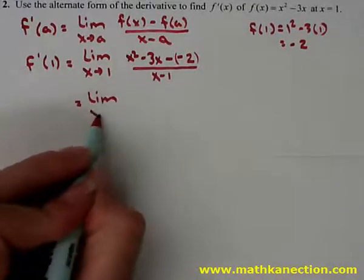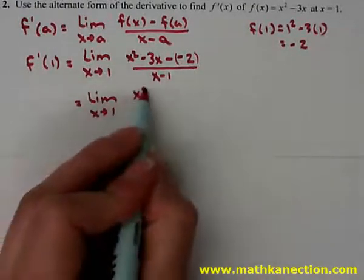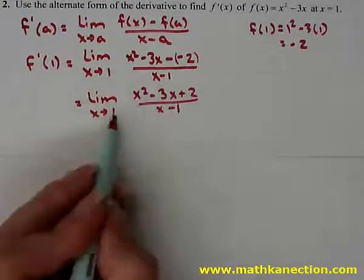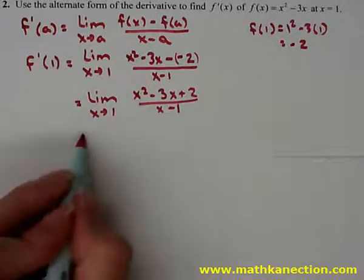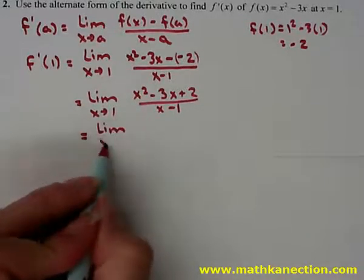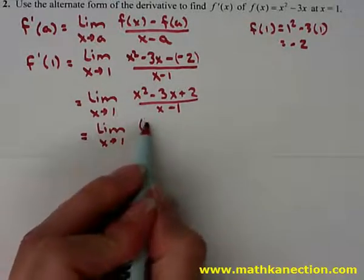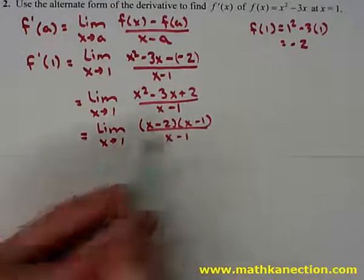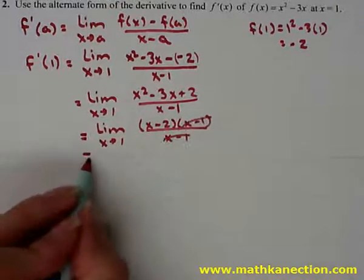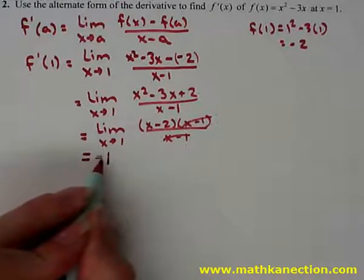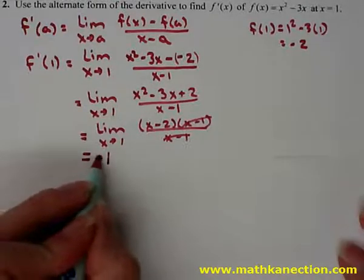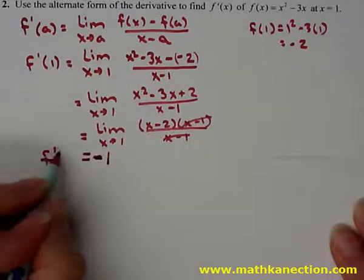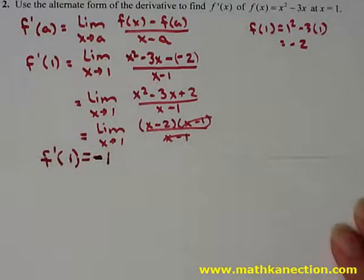So the limit as x approaches 1 of x squared minus 3x plus 2, all over x minus 1. If we try to plug in 1 we still have a problem, so we factor the top to get x minus 2 times x minus 1, over x minus 1. The x minus 1s eliminate, and when we plug in 1 we get negative 1. So f prime of 1 is negative 1.